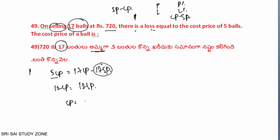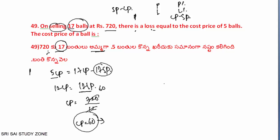Then 1CP has 17 by 12 SP value. That equals 60 rupees — this is important. The first question is now clear. What is the SP value? We have the CP value — this is the CP value.